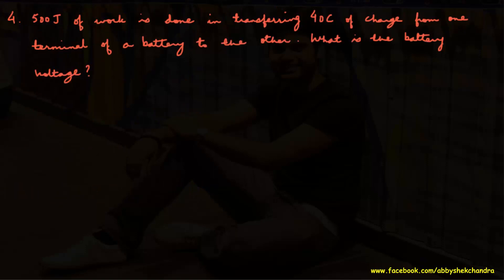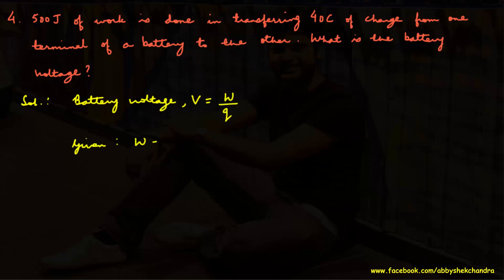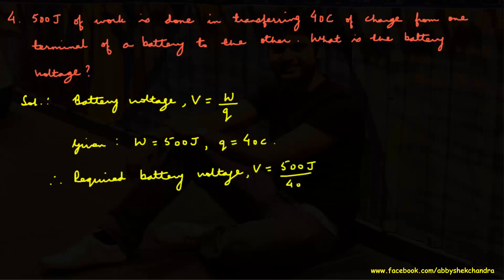Question 4: 500 joules of work is done transferring 40 coulombs of charge from one terminal of a battery to the other. What is the battery voltage? Battery voltage equals potential difference V = W divided by q. Given W = 500 joules and q = 40 coulombs, battery voltage V = 500 divided by 40 = 12.5 volts.